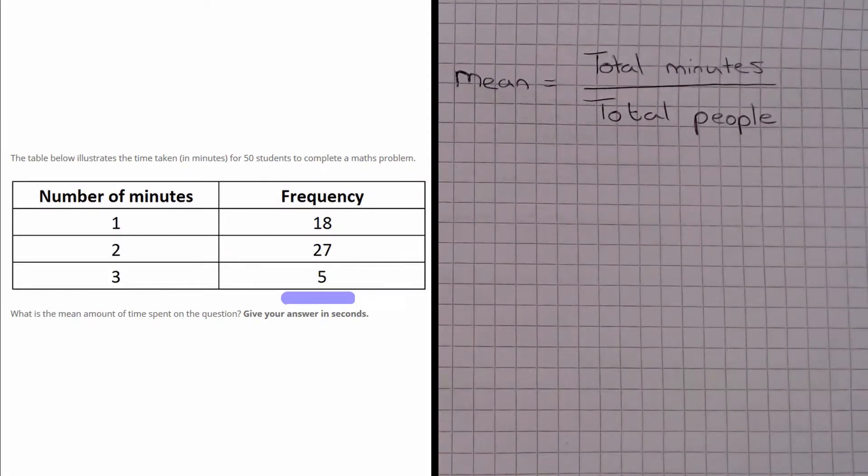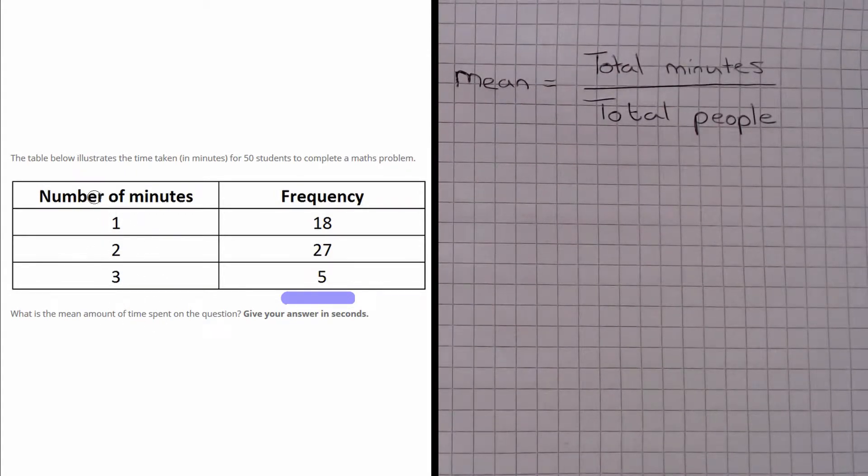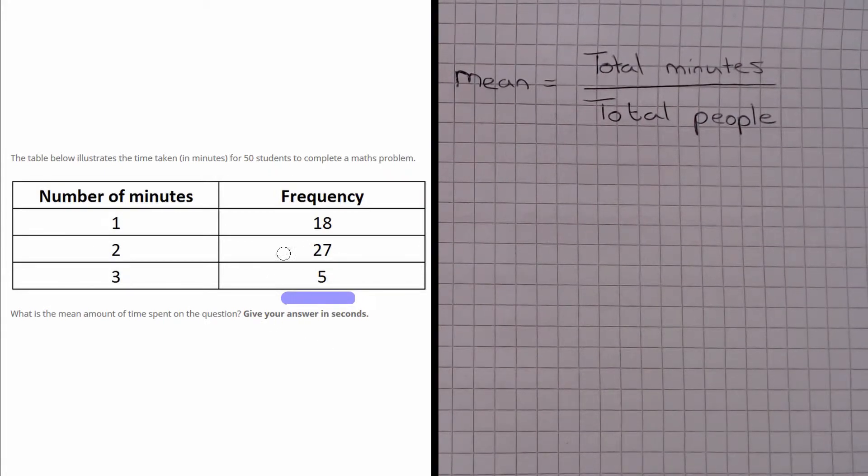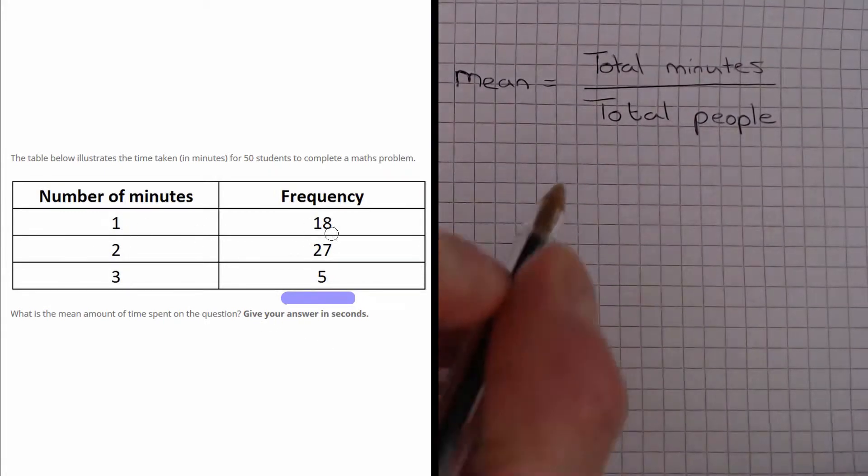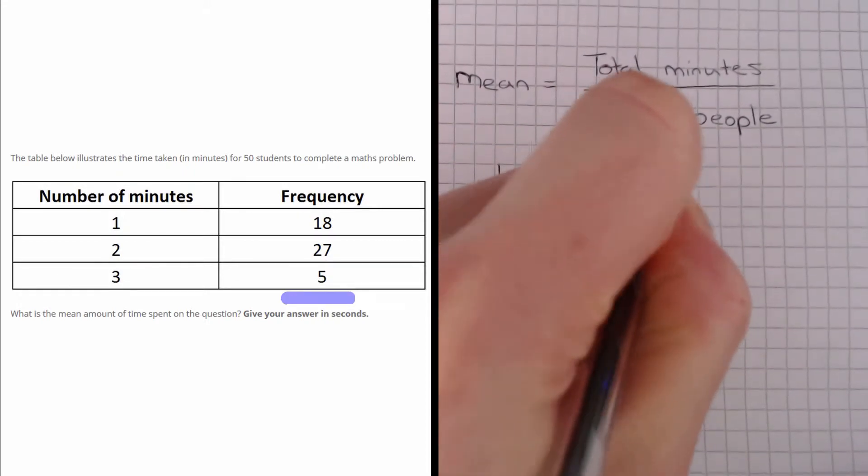Well this is a frequency table, so we can't just add up all the items in the first column. But we can think of it as follows. If 18 people spent 1 minute, then we have a total of 1 times 18, which equals 18 minutes for this first row.